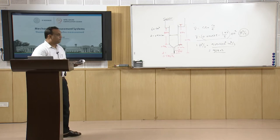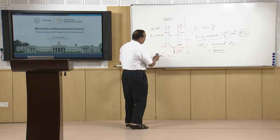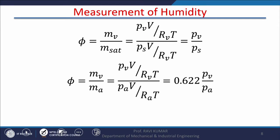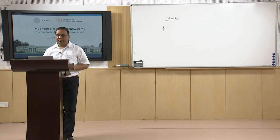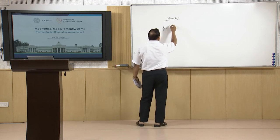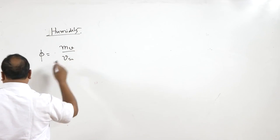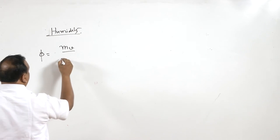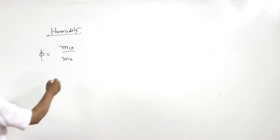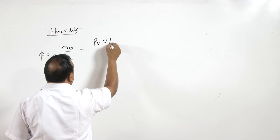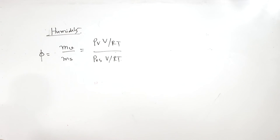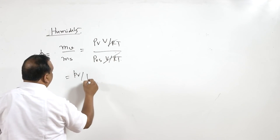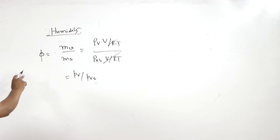Next is humidity measurement, which is very important for mechanical engineers. There are two types: relative humidity (φ) and specific humidity. Relative humidity is the mass of water vapor in air divided by the mass of water vapor in saturated air. Using the ideal gas law with constant temperature and volume, this simplifies to φ = PV / PVS, where PV is the partial pressure of vapor and PVS is the saturation pressure.